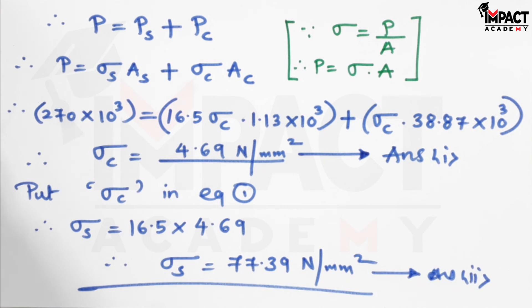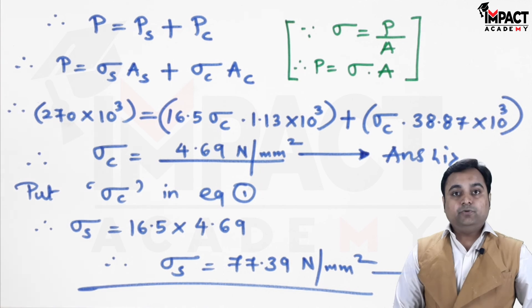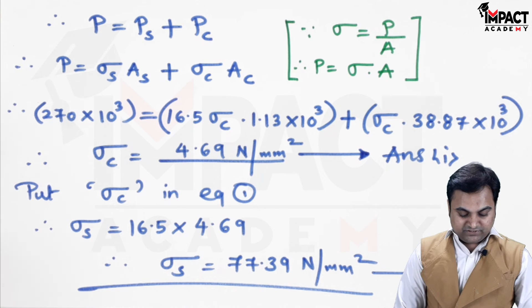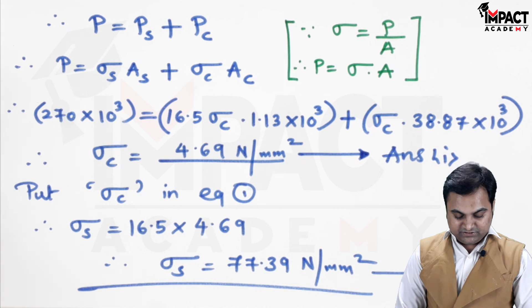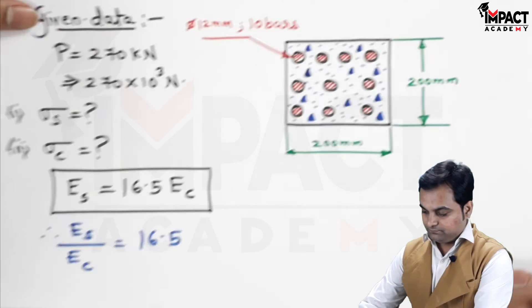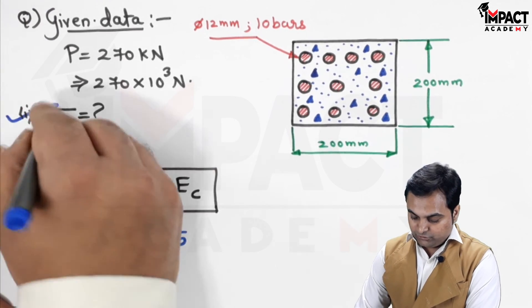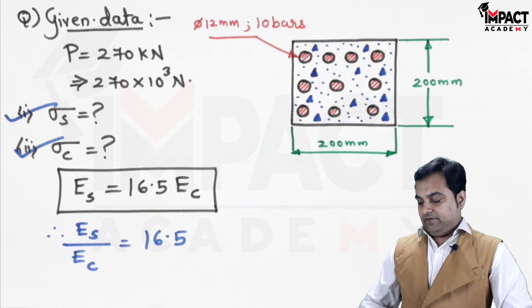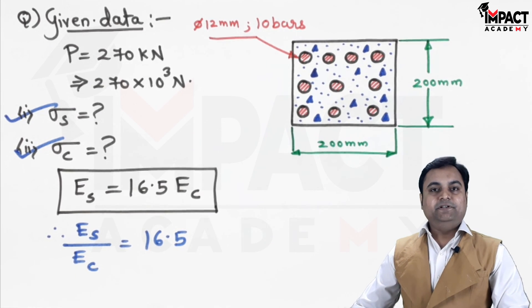So, when we see the problem, the two questions were asked. We had to calculate the stresses in two different materials, that is steel and concrete, for the given RCC column. And, both the questions have been answered. And, with this, the problem gets completed.